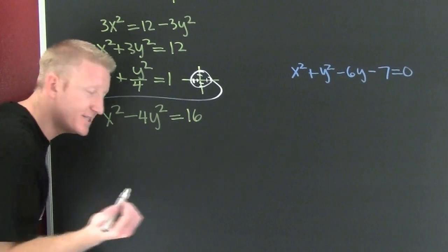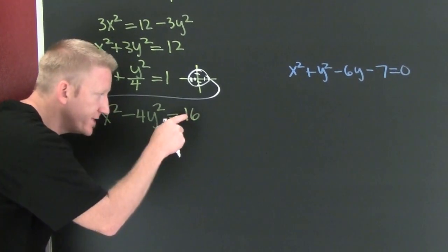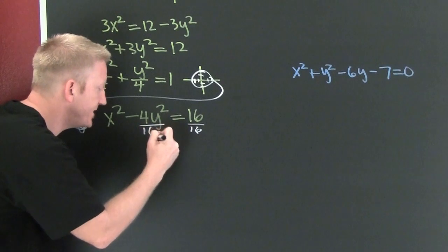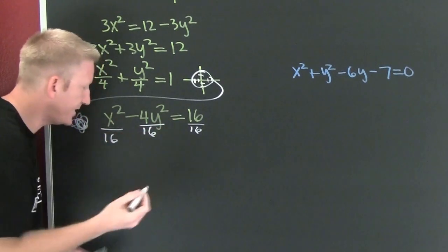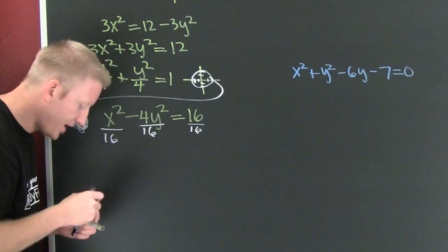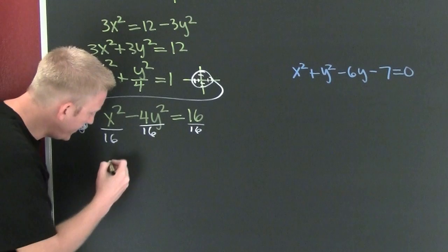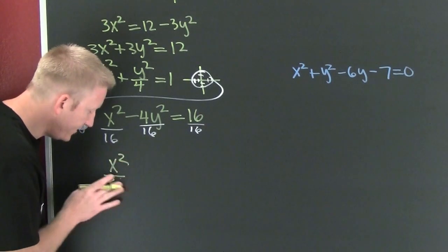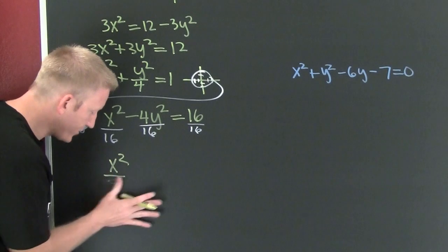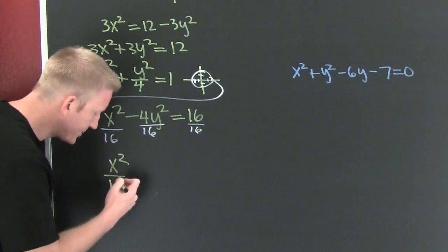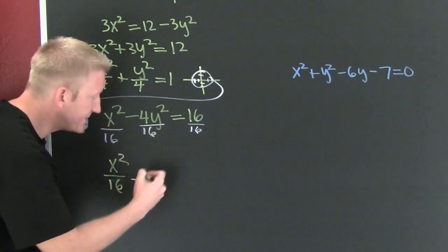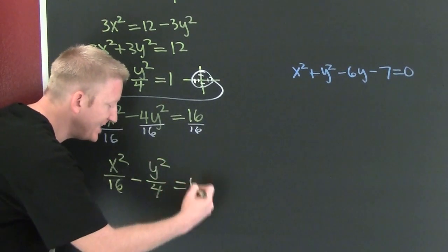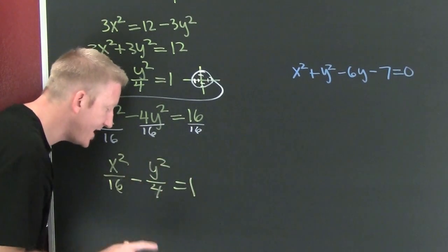I'm down here. I need to put it in standard form. Divide by 16. Now, what do we have here? We have x squared over 16, which is 4 squared. 16 minus y squared over 4. That's equal to 1. It's in standard form.